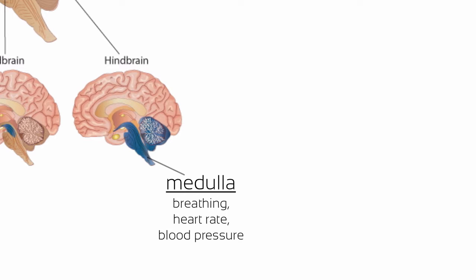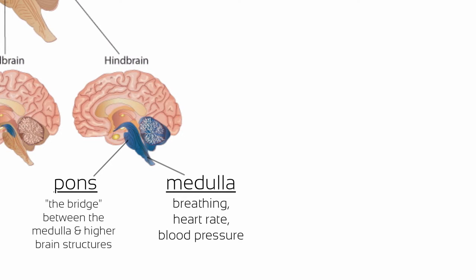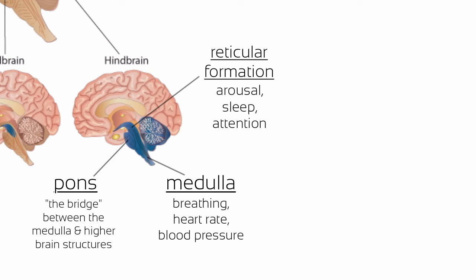The rounded section above and to the front of the medulla is the pons, which is Latin for 'bridge.' This structure serves as a bridge between the medulla and the higher brain structures. Slightly behind it, we can see the reticular formation, which plays a role in alerting higher brain structures about incoming information. The reticular formation is involved in arousal, sleep, and attention — without it, we couldn't function very well.